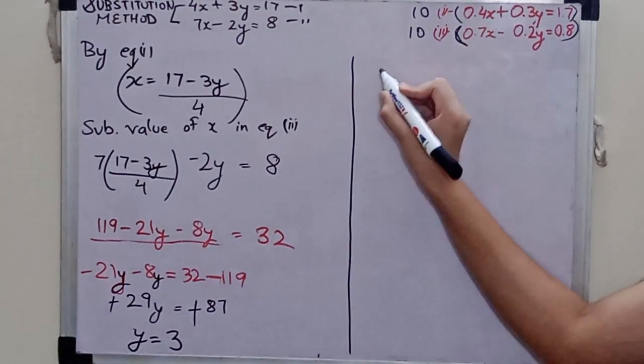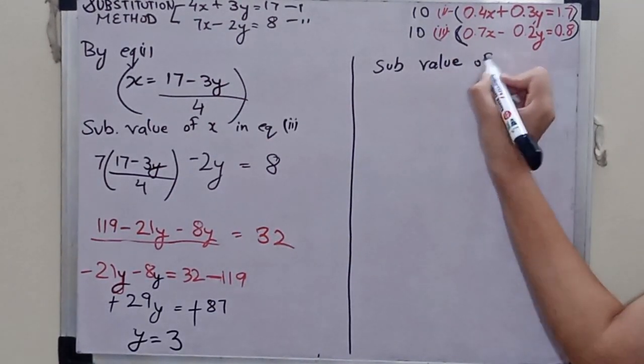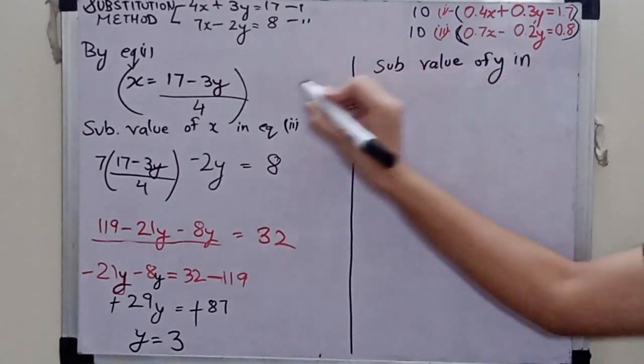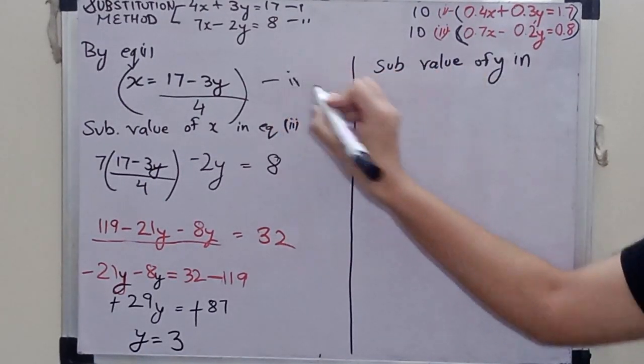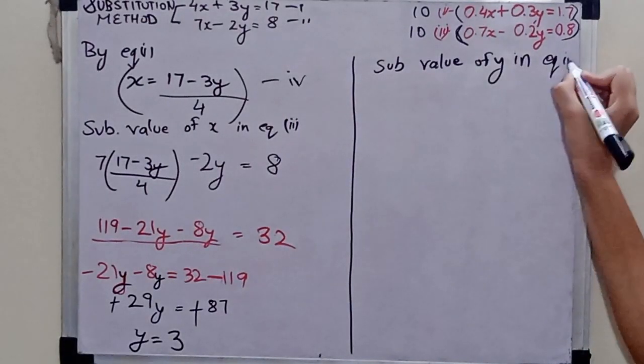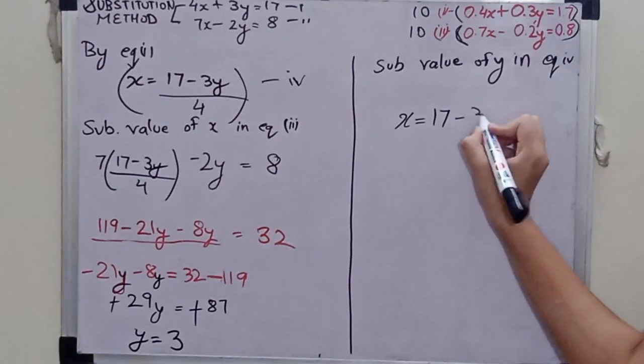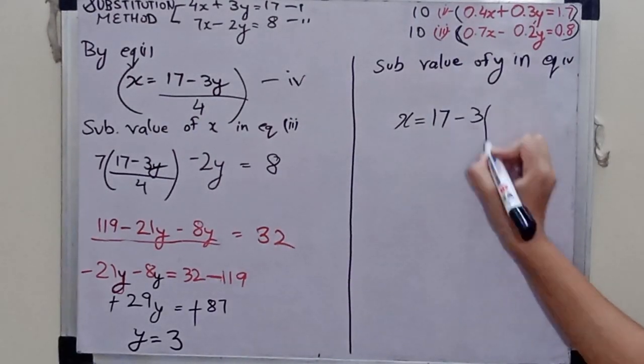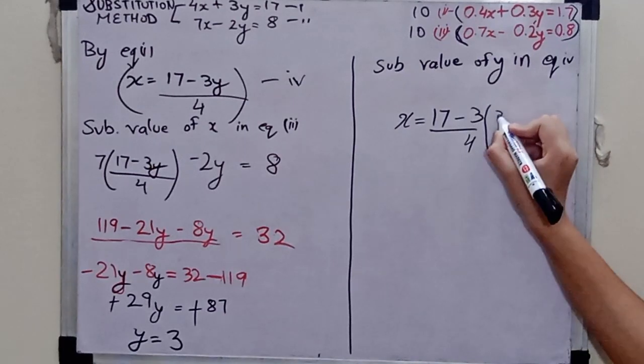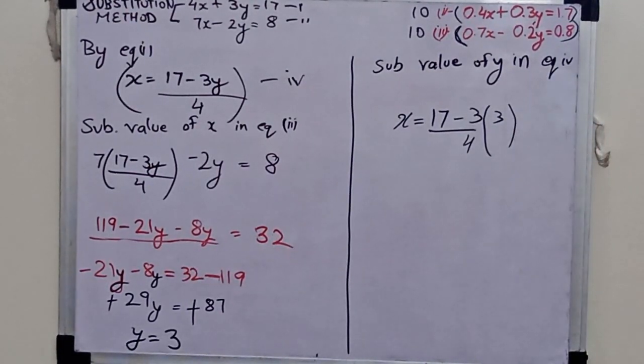Now X's value: substitute value of Y in equation 1. X equals to 17 minus 3 times 3 divided by 4, which gives X equals to 2.